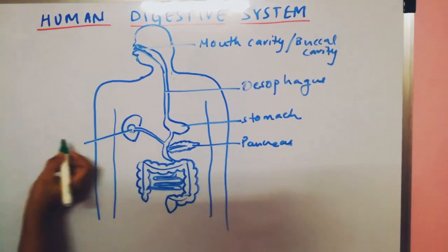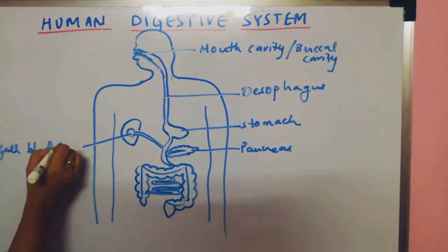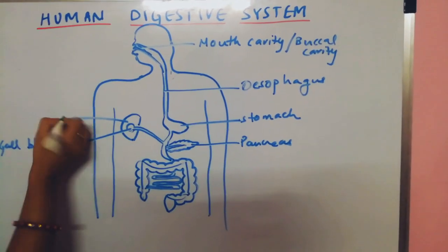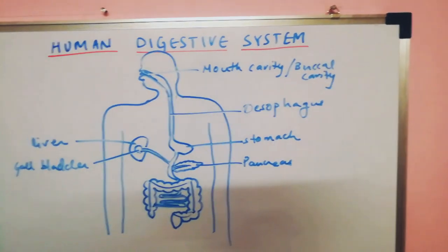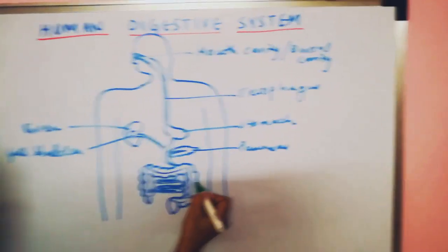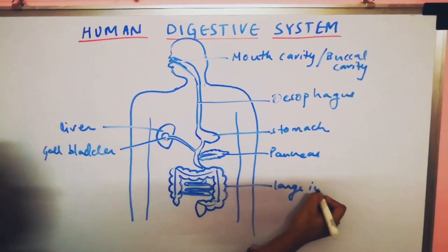Then this round globular structure is gallbladder. Semi-circle here, which we have made, is liver. Then this big, because it is called as large intestine.